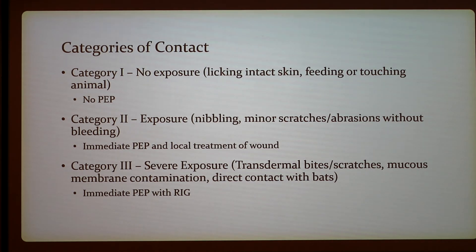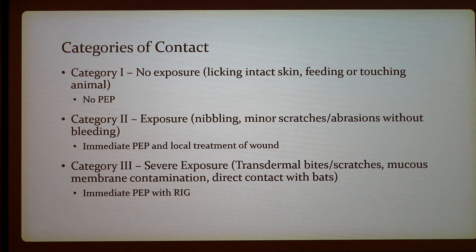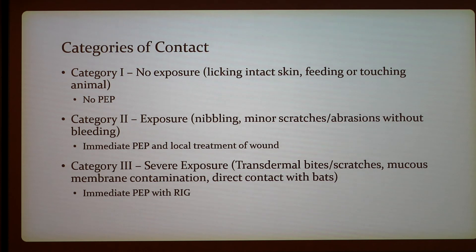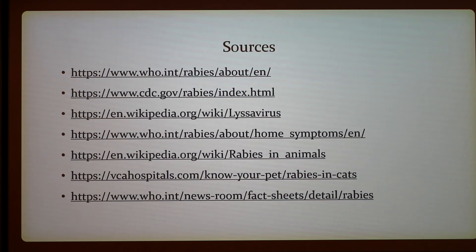The categories of exposure are: Category 1 — no exposure, such as licking intact skin or touching an animal, requiring no PEP. Category 2 — exposure, including nibbling or minor scratches without bleeding, requiring immediate PEP and local wound treatment. Category 3 — severe exposure, including transdermal bites, scratches, mucous membrane contamination, or direct contact with bats, which requires RIG in addition to PEP.